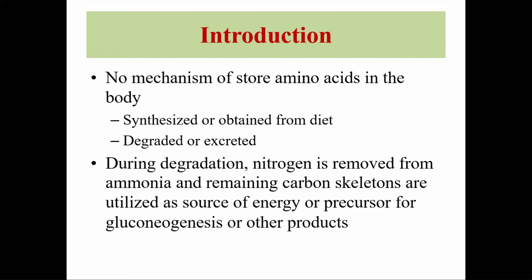Amino acids contain two functional groups: the amino group and the carboxylic part. The amino group contains nitrogen, and during degradation, the nitrogen part of the amino group is removed in the form of ammonia. The remaining carbon skeletons are utilized as a source of energy or as precursors for gluconeogenesis or other products.